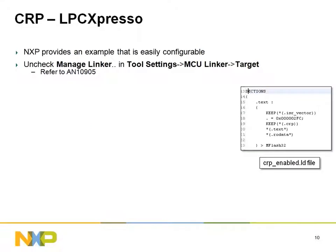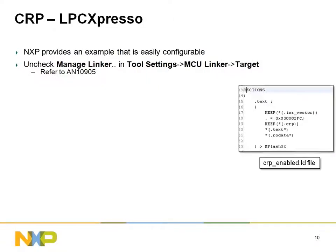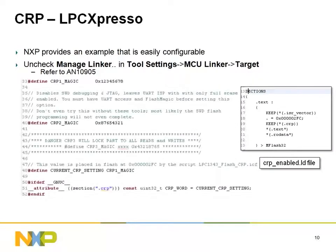The same strategy used for IAR applies largely to LPC Expresso. Start by configuring your project to use a manually controlled linker setup. To do this, you'll want to refer to the application note listed, or simply use the example CRP project which is distributed with LPC Expresso as the starting point for your next design. Once you've configured your linker, you also need to declare a constant to be placed in the .crp section. This example code illustrates how this is done in LPC Expresso.